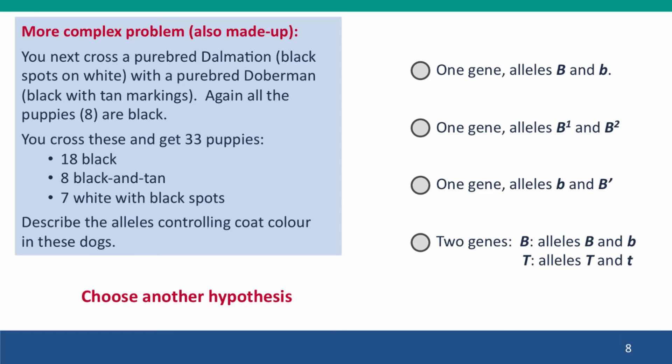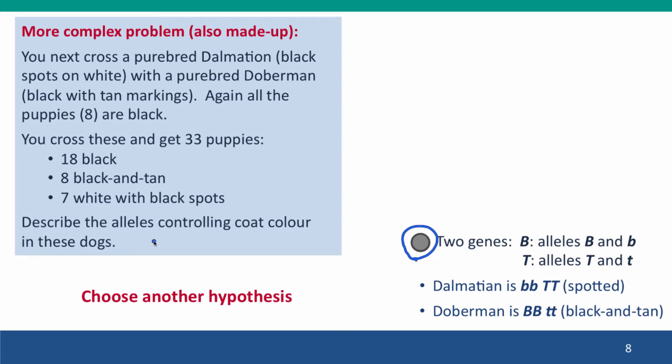Back to our hypothesis. This time, let's try the last of our hypotheses. Instead of adding an allele to the gene we've already been thinking about, let's add another gene into the mix. Now we've got the two alleles of big B that we had in our original problem, and we've got two alleles of a second gene we're calling T. In that case, what will our genotypes of our parents be? The dalmatian, as before, will be little b, little b. We're going to say that the dalmatian is little b homozygous, big T homozygous. And the doberman has the dominant alleles at the B locus and recessive alleles at the T locus that cause it to be black and tan.